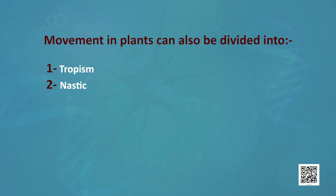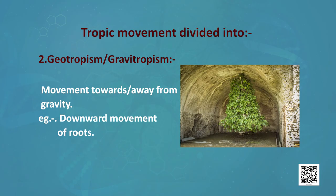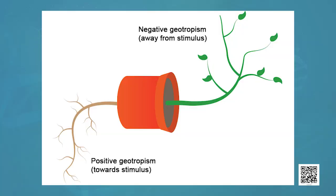Movement in plants can also be divided into tropism and nastic movement. In tropic movement, the movement is direction-dependent. It is divided into: first, phototropism — as the name suggests, this is movement towards sunlight, like the movement of plants towards the sun. Second, geotropism or gravitropism — this is the movement towards or away from gravity. Geotropism is divided into positive geotropism, which is movement towards gravity like the downward movement of roots, and negative geotropism, which is movement of plant parts against gravity.